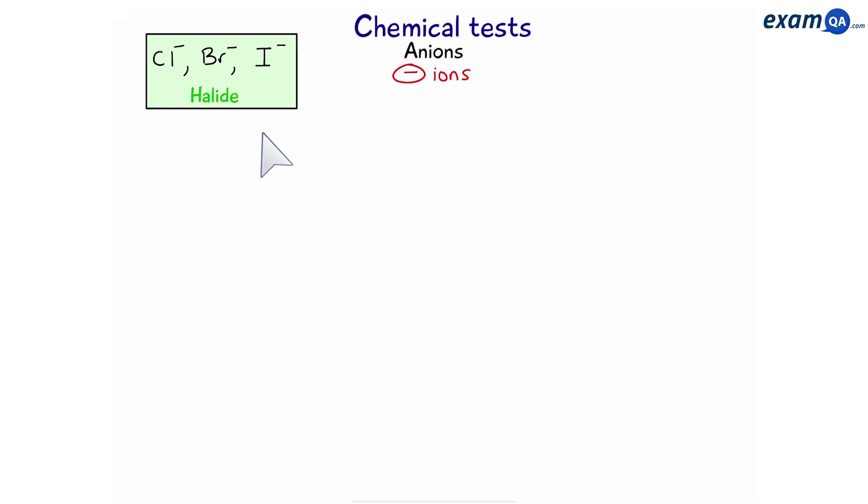Let's move on to the halides. If we have a solution of chloride or bromide or iodide ions and you mix them with silver ions which we can get from silver nitrate.